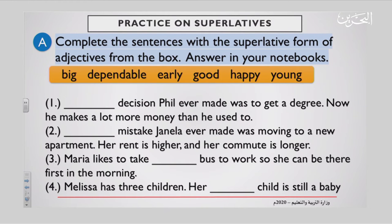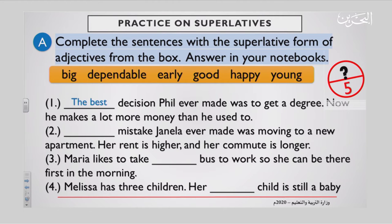Task two: complete the sentences with the superlative form of adjectives from the box. Answer in your notebook. The adjectives are: big, dependable, early, good, happy, and young. Number one: the best decision Phil ever made was to get a degree — now he makes a lot more money than he used to. Go back to the box and cross out good, because the best is the superlative form of good.